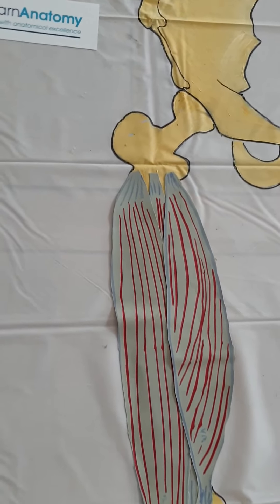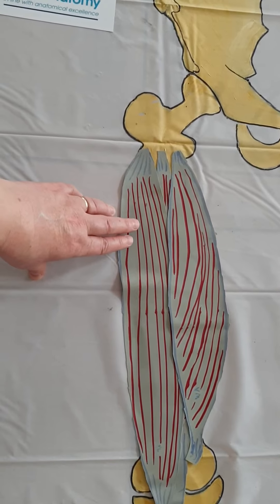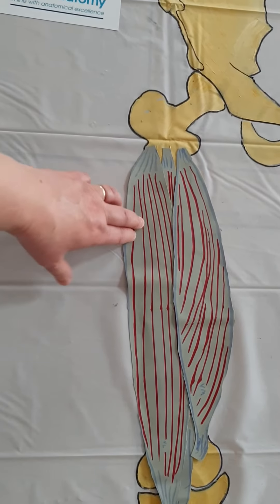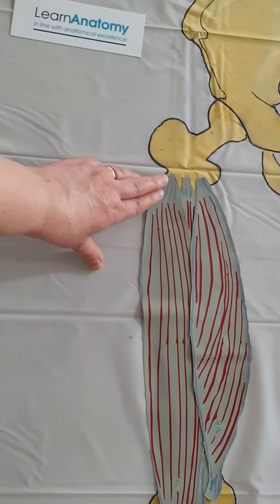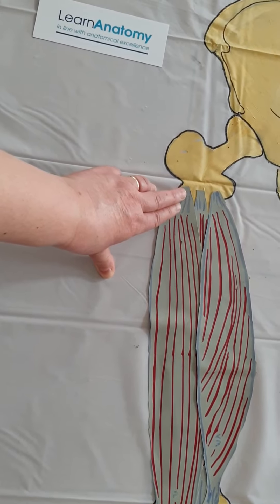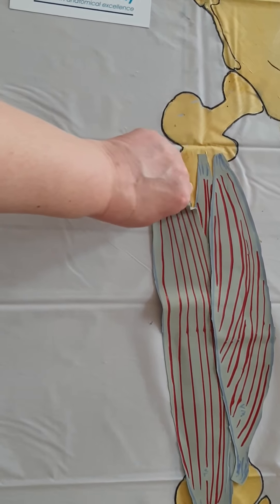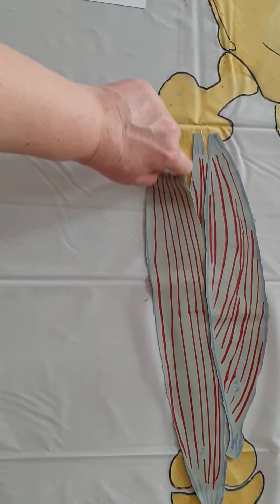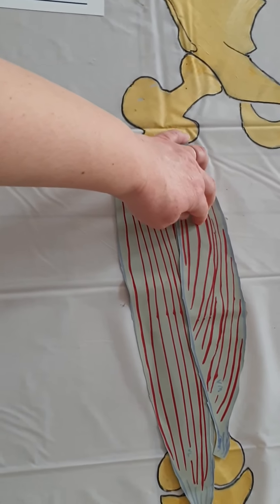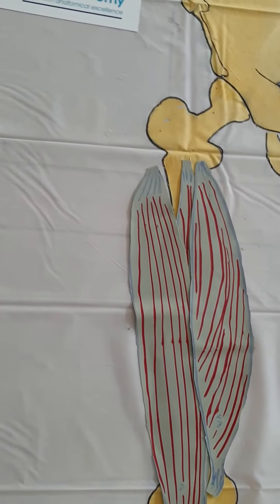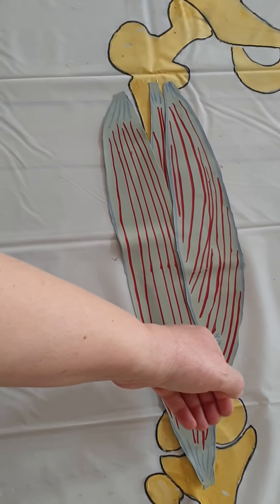So here we've got the vastus lateralis and here the vastus medialis. The vastus lateralis attaches to the lateral lip of the linea aspera, which is a line here. And the medialis attaches to the medial lip of the linea aspera. And they both come down and insert into that patella tendon that comes down to the tibial tuberosity.